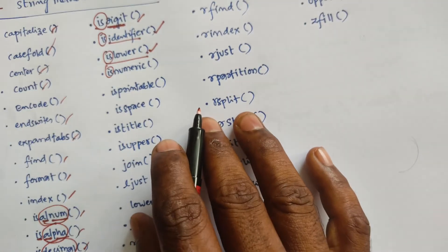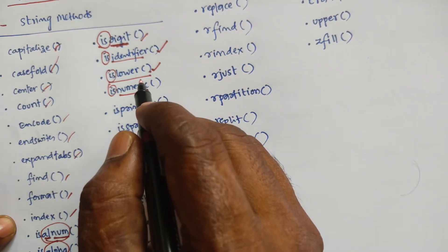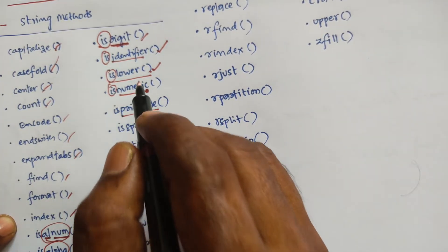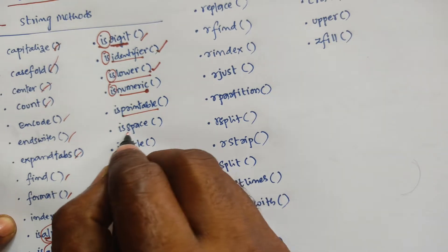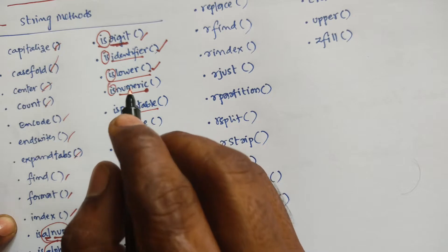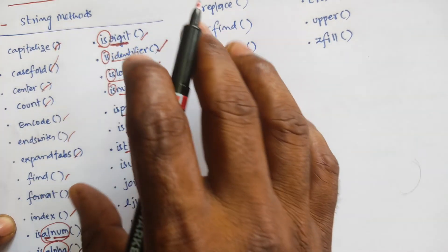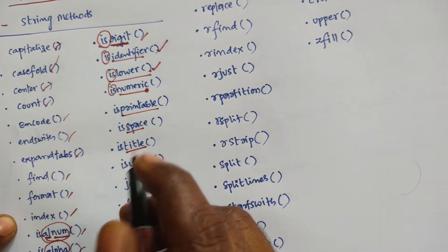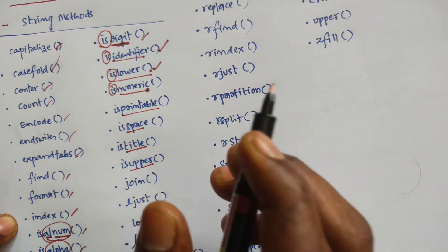Isnumeric returns true if all characters in the string are numeric. Isprintable returns true if all characters in the string are printable. Isspace returns true if all characters in the string are whitespace. Istitle returns true if the string follows the rules of a title. Isupper returns true if all characters in the string are uppercase.